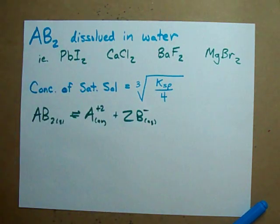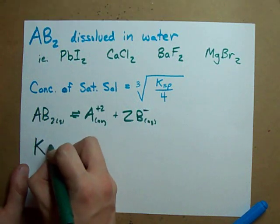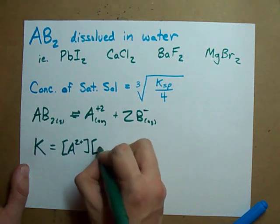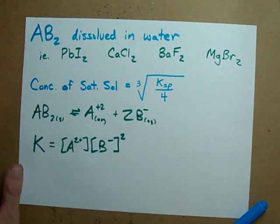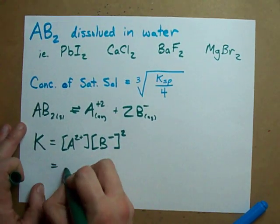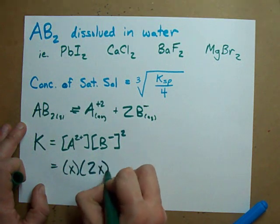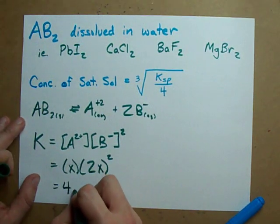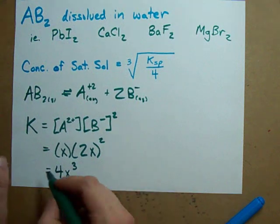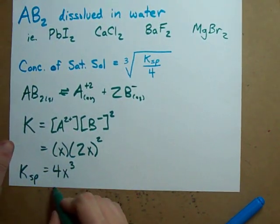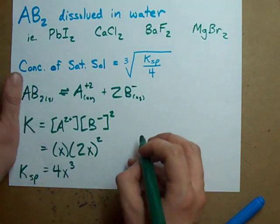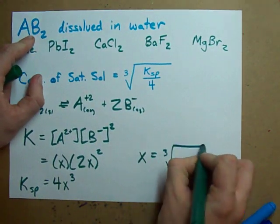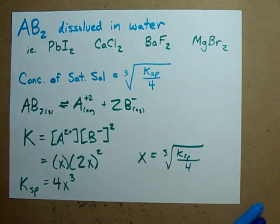So when you do your equilibrium expression, not only are you going to get a square on your B minus from the two, but the concentration of B is going to be double what the concentration of A was. See how it's two times? When you multiply these out, you get 4X cubed. How do you solve for X here? You got to divide by four, then take the cubed root. And that's why the saturation concentration for these compounds is the cubed root of your KSP divided by four.